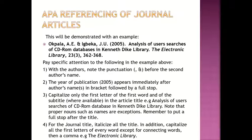The year of publication, for example 2005, appears immediately after the author's names and should be in brackets, followed by a full stop. Capitalize only the first letter of the first word — as mentioned in the general rule — and of the subtitle where available in the article title. For example: 'Analysis of user searches of CD-ROM database in Connecticut library.' You can see that only the word 'Analysis' is capitalized. Note that proper nouns such as names are exceptions to this rule, like 'Connecticut library.' Remember to put a full stop after the title.